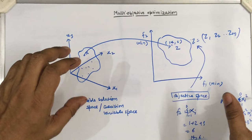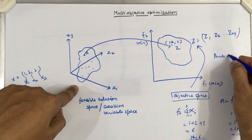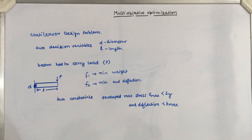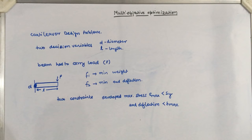Before going further, we describe the concept of the Pareto optimal set. To understand Pareto optimal solutions, consider a real-world example: the cantilever beam design problem. We have to design a beam with two decision variables — the diameter d and the length l of the beam — and the beam must carry a load P.